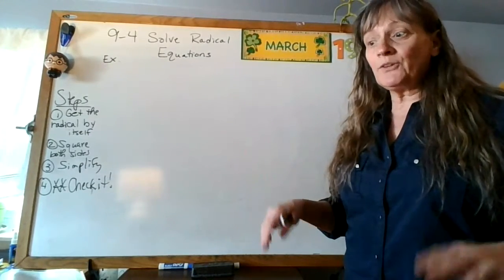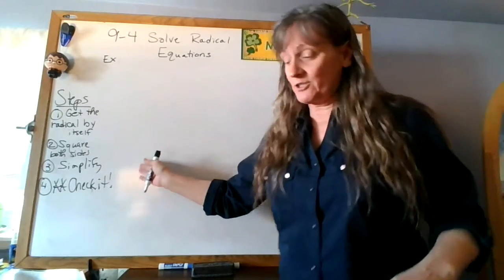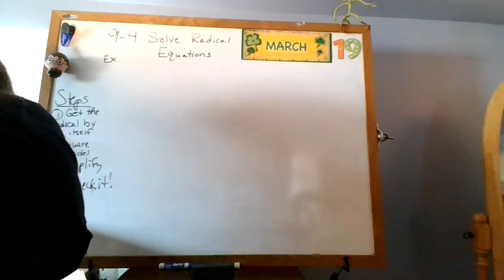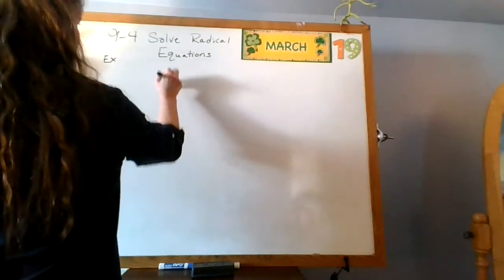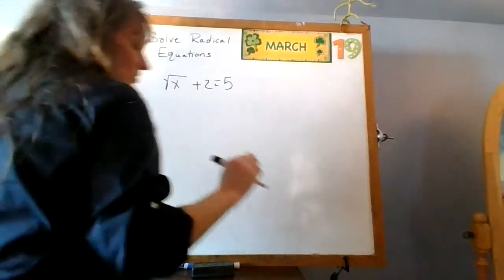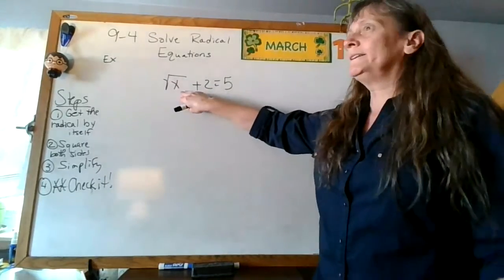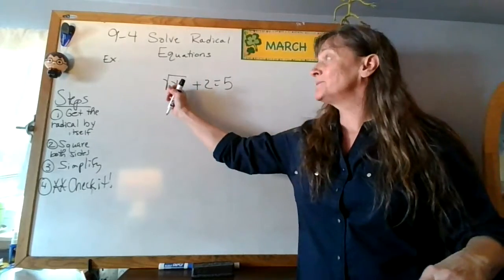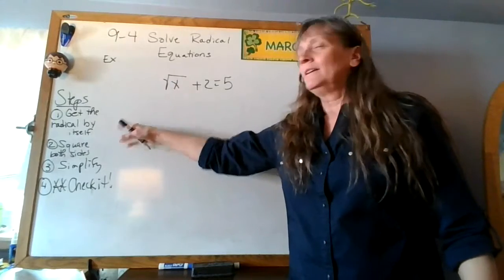We're going to start with some examples and I'm going to show you how to do this — really not that hard if you follow these directions step by step. So the first thing we're going to do: let's try the square root of x plus two equals five. We've done things like this before — when we did absolute value with variables, we had to isolate the absolute value, get it totally by itself. That's exactly what we're doing again.